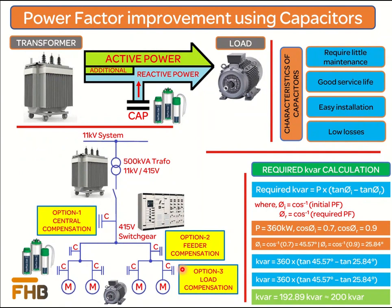The value of capacitor banks required for a power system is measured in kVAr. Assuming a 360 kW connected load where we need to improve the power factor from 0.7 to 0.9, applying the formula shows that we need to install capacitor banks of 200 kVAr.